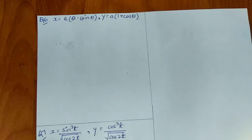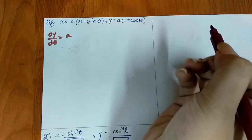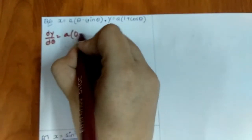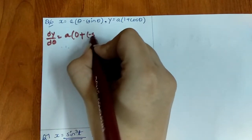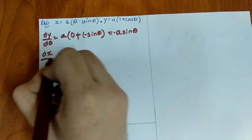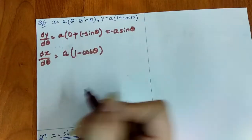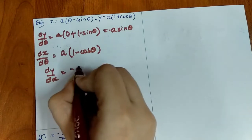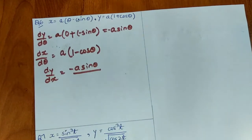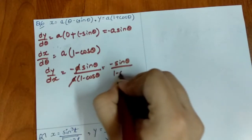Question 6: x = a(θ − sinθ), y = a(1 + cosθ), find dy/dx. dy/dθ: a is constant, derivative of 1 is 0, derivative of cosθ is −sinθ, so dy/dθ = −a sinθ. dx/dθ: derivative of θ is 1, derivative of −sinθ is −cosθ, so dx/dθ = a(1 − cosθ). Then dy/dx = −a sinθ / a(1 − cosθ). The a cancels, giving −sinθ / (1 − cosθ).